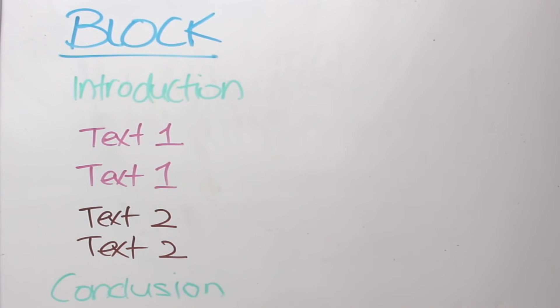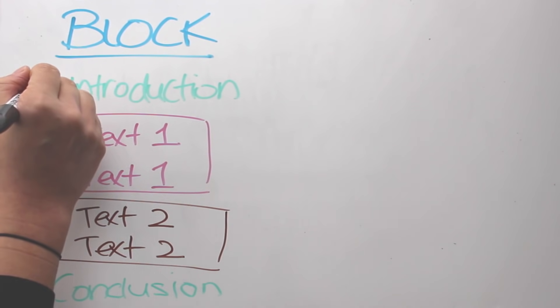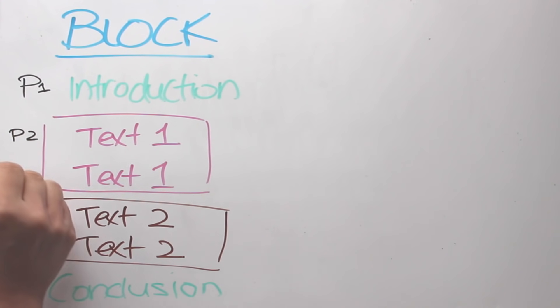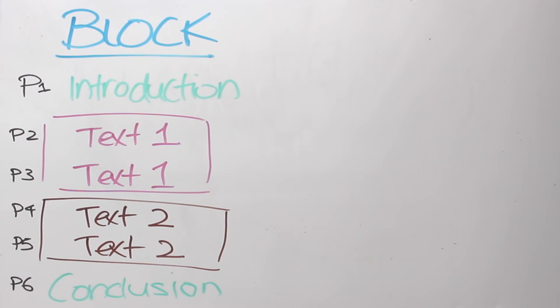So the reason why this is called a block structure is because it's literally placing your texts and discussing them in blocks. So I'm just going to write down paragraph one, two, three, four, five, and six on the left-hand side so that it's clearer for you how this would look like in an essay.